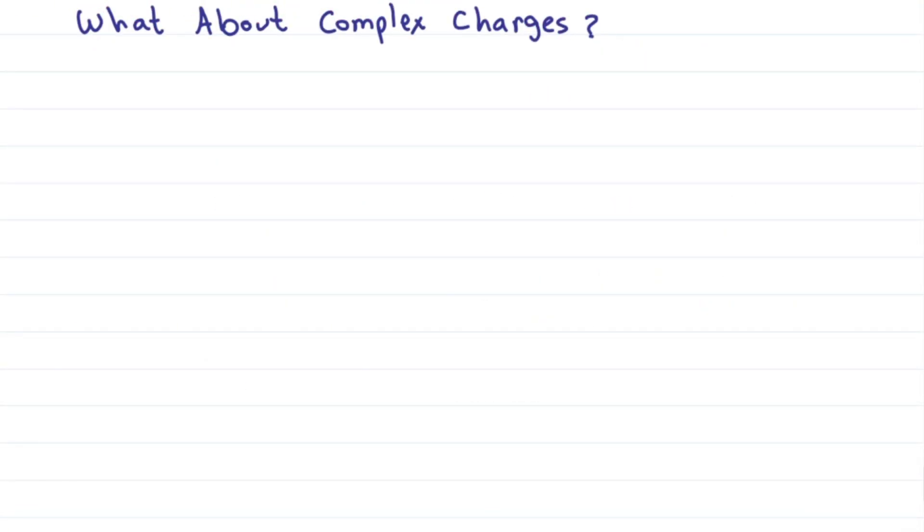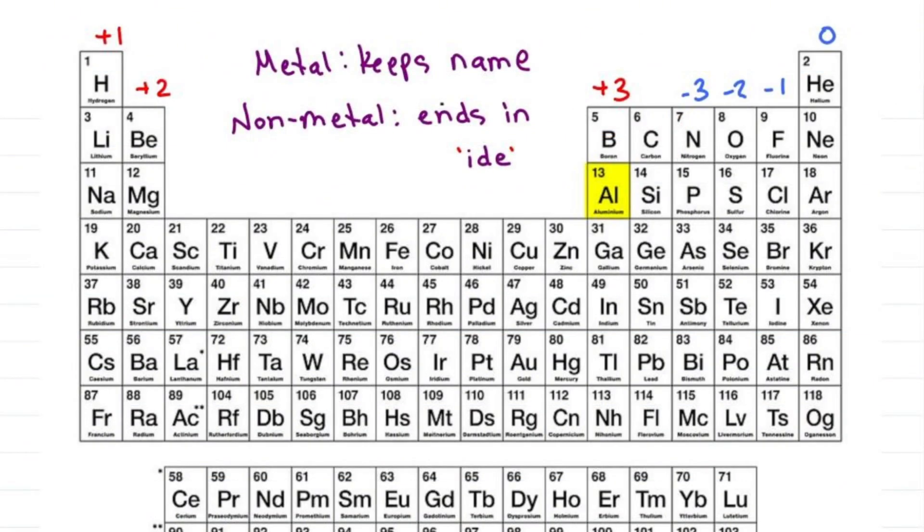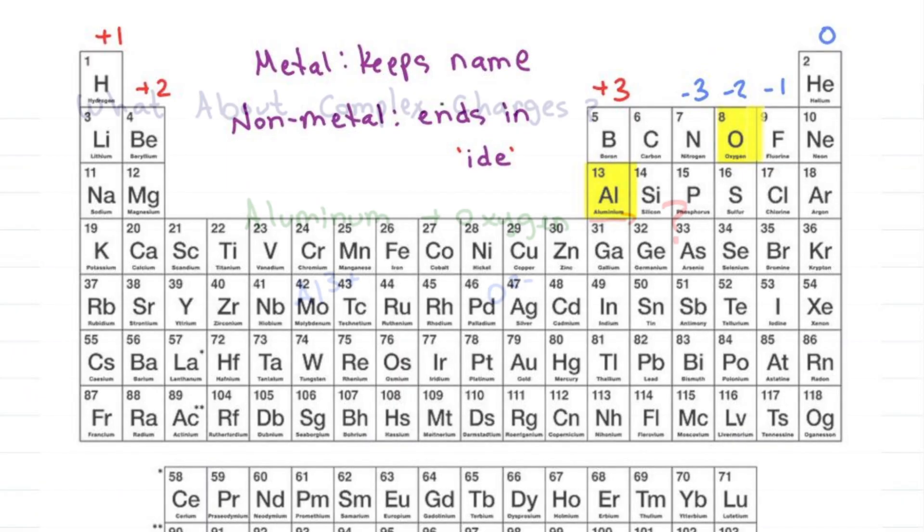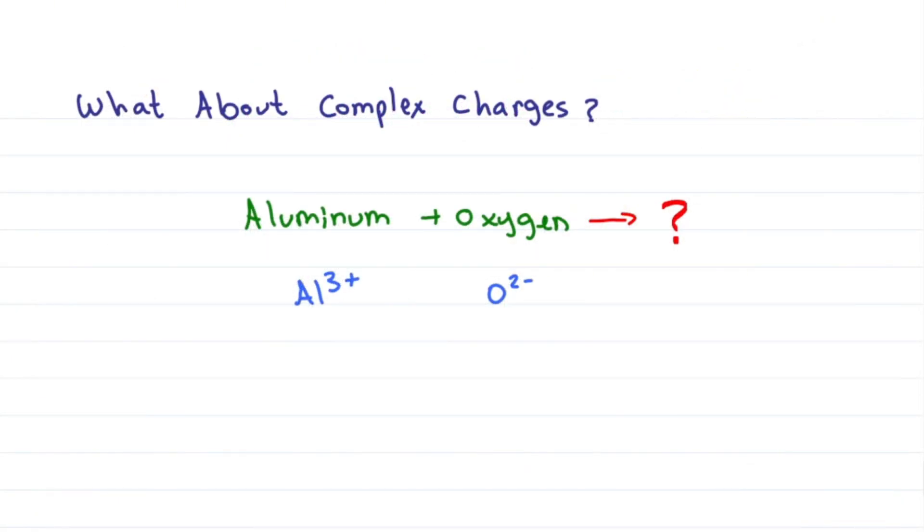What if both have complex charges? For example aluminum and oxygen. Aluminum is plus 3 and oxygen is minus 2. We can do it the long way figuring out how many pluses and how many minuses gives me a total. Oh my goodness, that takes too long.